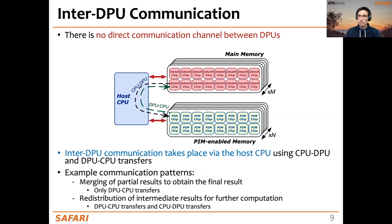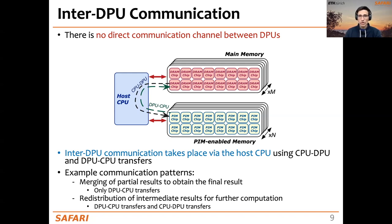These CPU-DPU and DPU-CPU data transfers are very important because we need them to enable inter-DPU communication, since there is no direct communication channel between DPUs. We discussed example communication patterns such as merging partial results to obtain a final result — requiring only DPU-to-CPU transfers — or the redistribution of intermediate results for further computation, which requires both DPU-to-CPU and CPU-to-DPU transfers. Today we will talk about more workloads using these patterns and their performance implications.